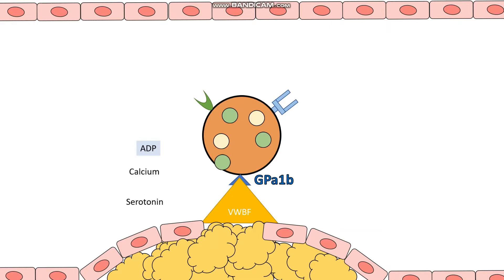Serotonin helps with further vasoconstriction of the blood vessel, thus limiting the amount of blood that's going to escape. Calcium is involved in the clotting cascade — in fact it's factor four of the clotting cascade — so it's very essential for secondary hemostasis. However it doesn't have any huge relevance to antiplatelets, so we're going to ignore these molecules for now.